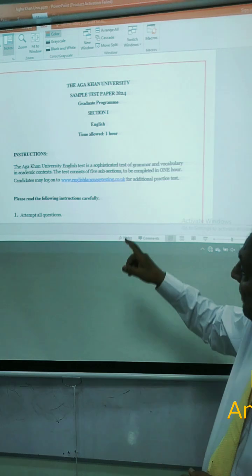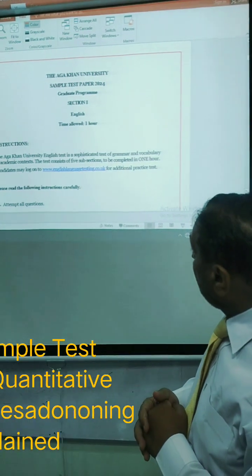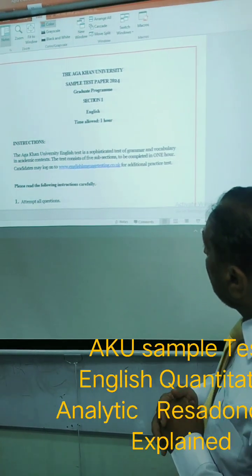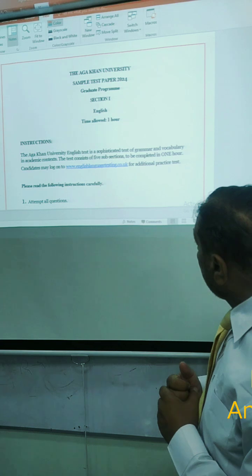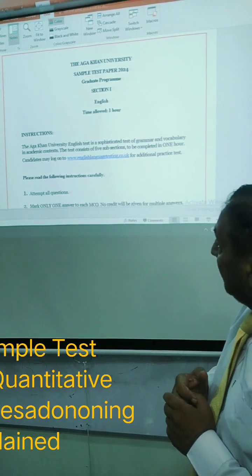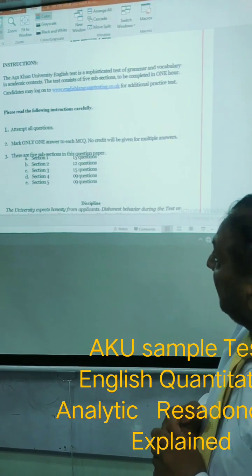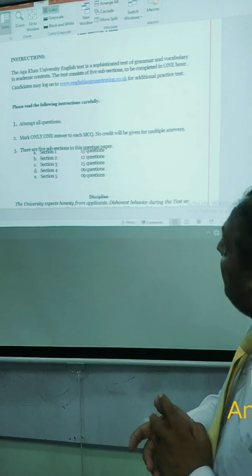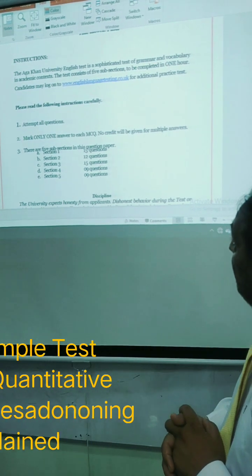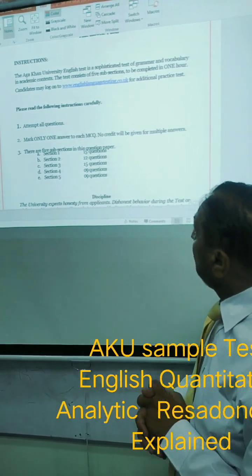The instructions are: the Aga Khan University English test is a sophisticated test of grammar and vocabulary in academic context. The test consists of five subsections to be completed in one hour.